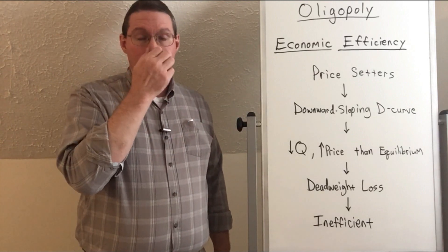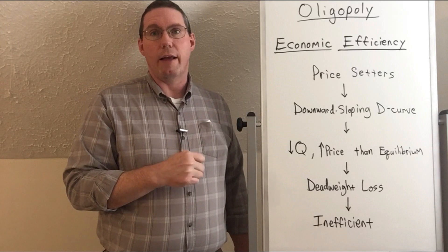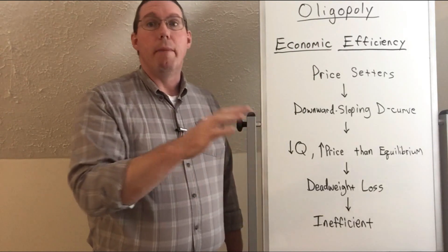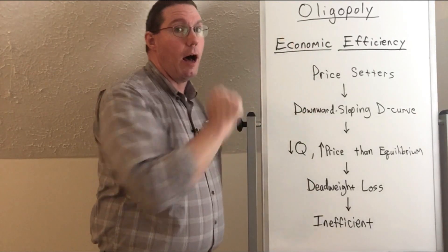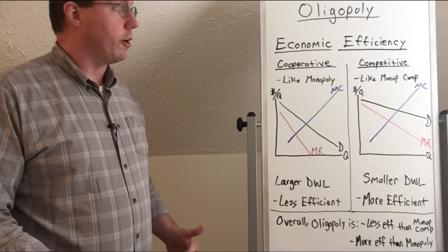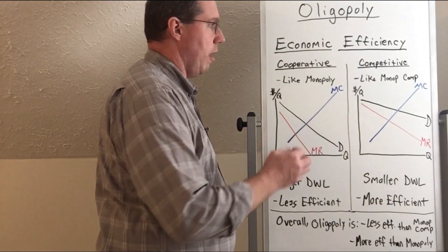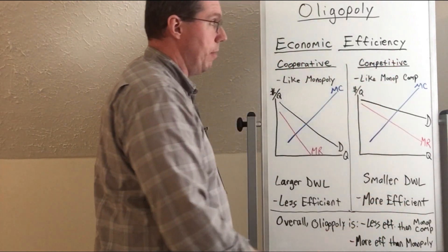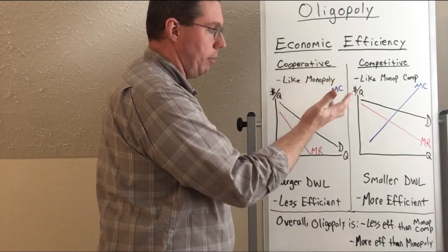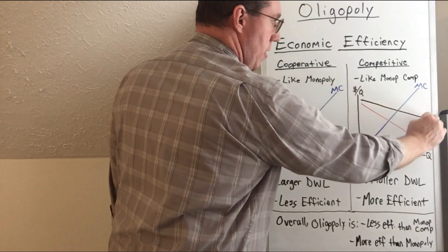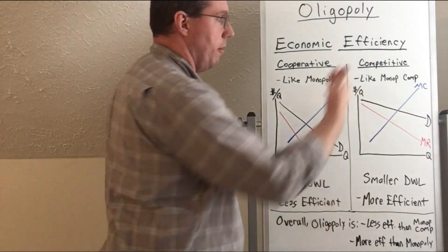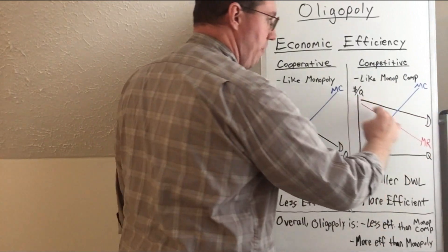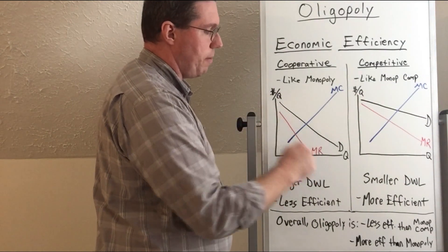Now let's look graphically at what this deadweight loss looks like. We're going to compare the monopoly cooperative oligopoly to the monopolistic competition competitive oligopoly firms. We'll compare the economic efficiency of a cooperative oligopoly versus a competitive oligopoly. A cooperative oligopoly is more like monopoly and has a steeper demand curve, while the competitive one is more like monopolistic competition and has a flatter demand curve and therefore a flatter marginal revenue curve.